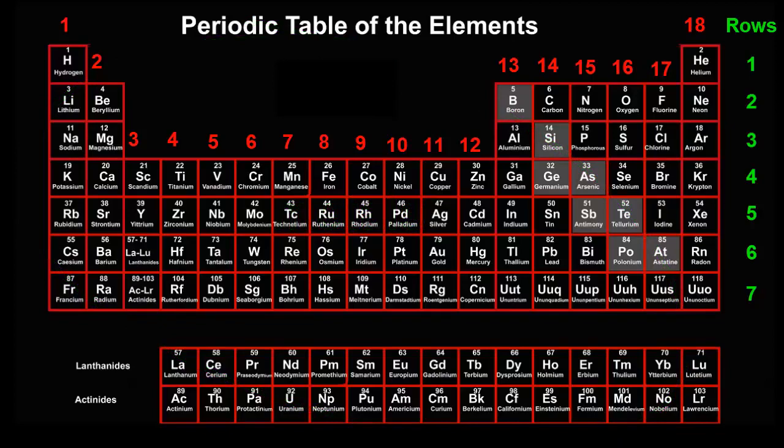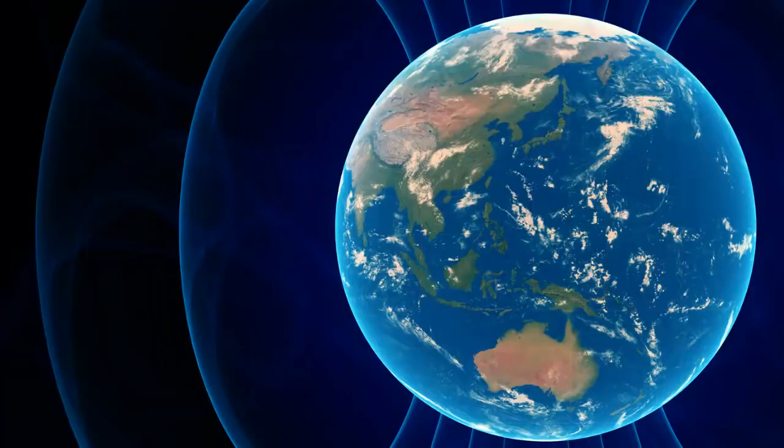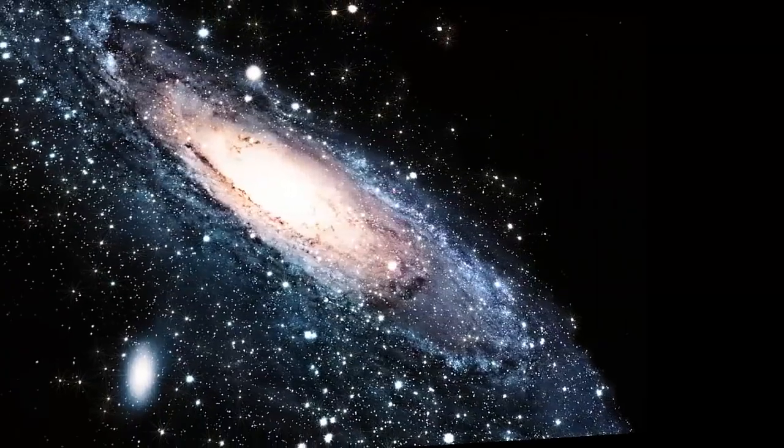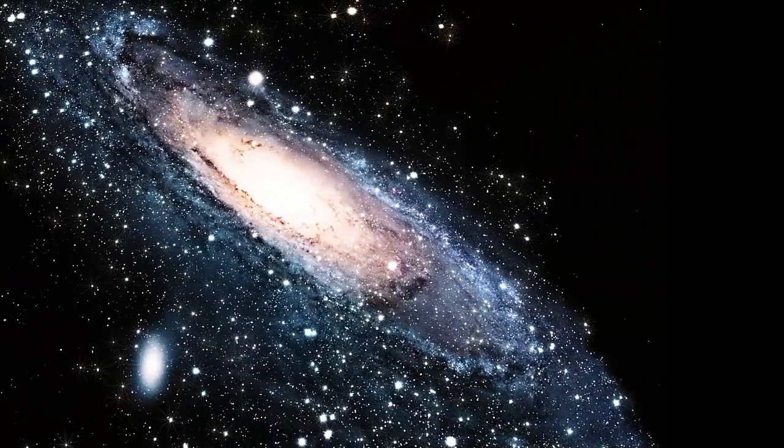But that doesn't mean they're more abundant, because in the Earth's crust, there are more oxygen and silicon atoms than the rest combined. And the universe as a whole is mostly hydrogen.